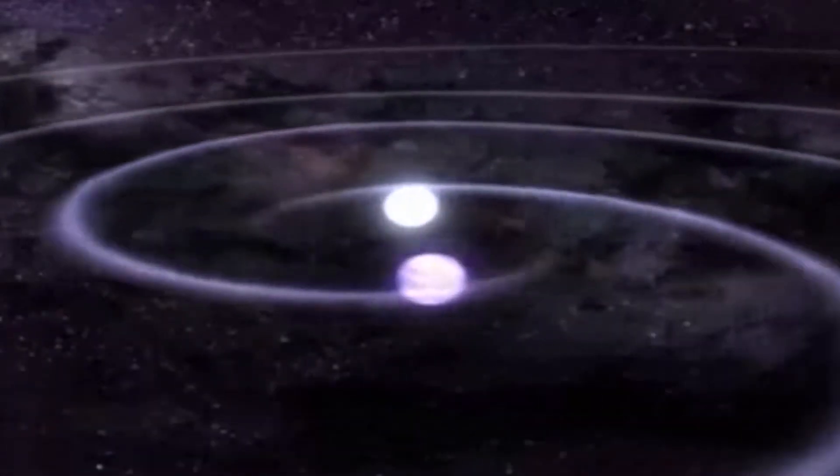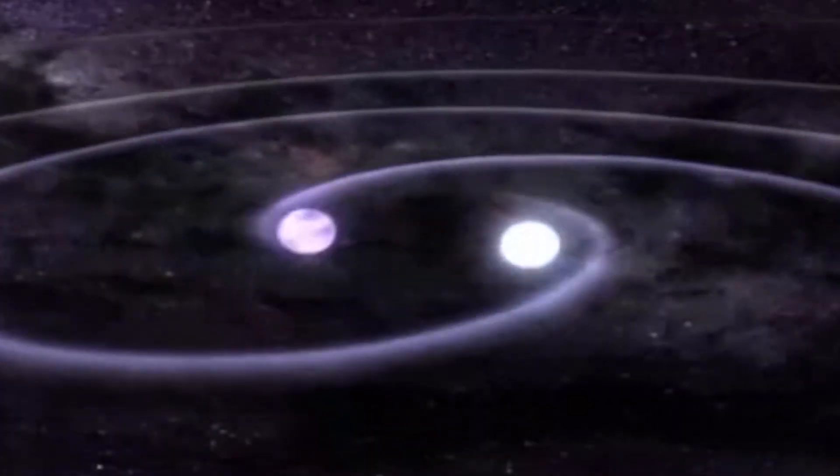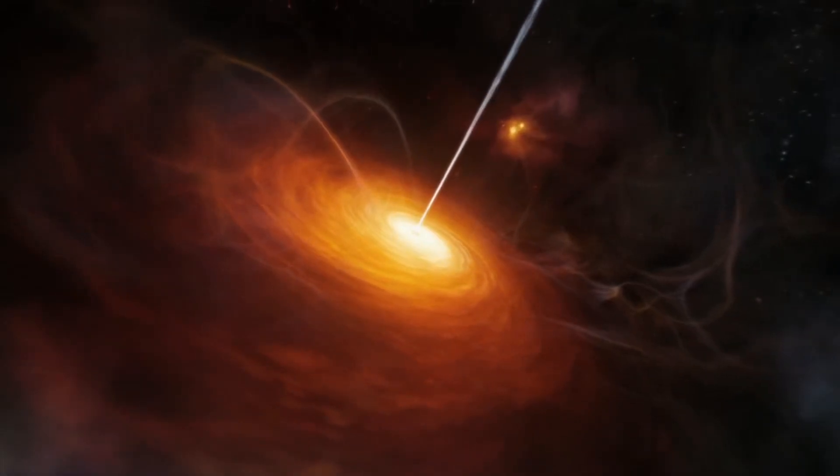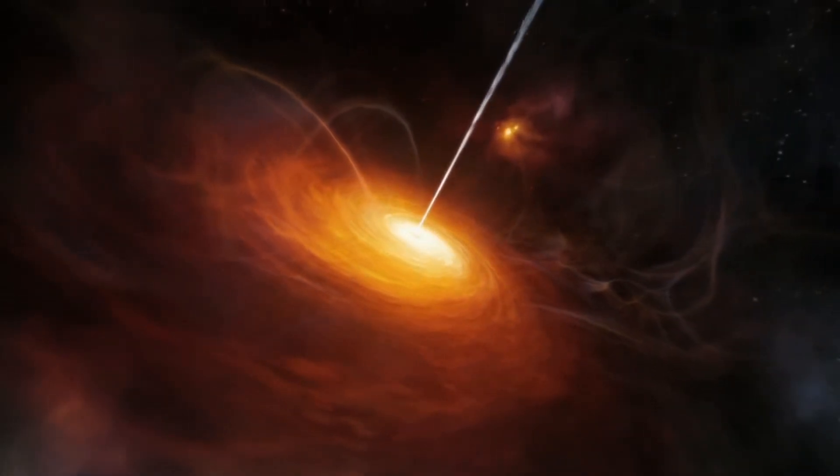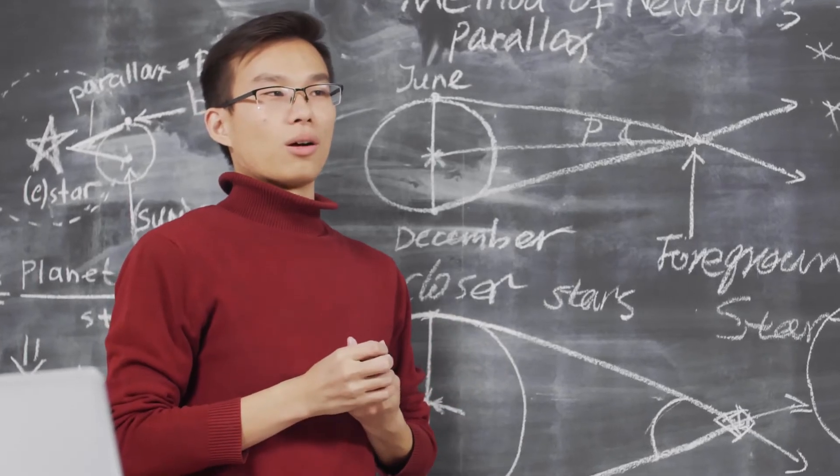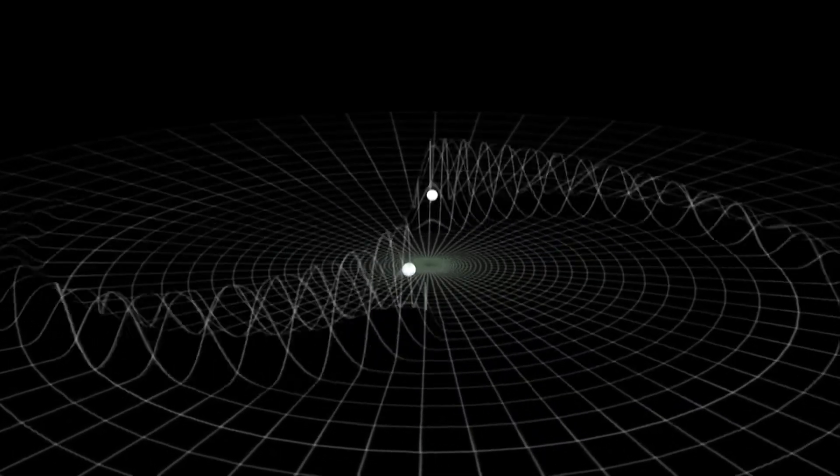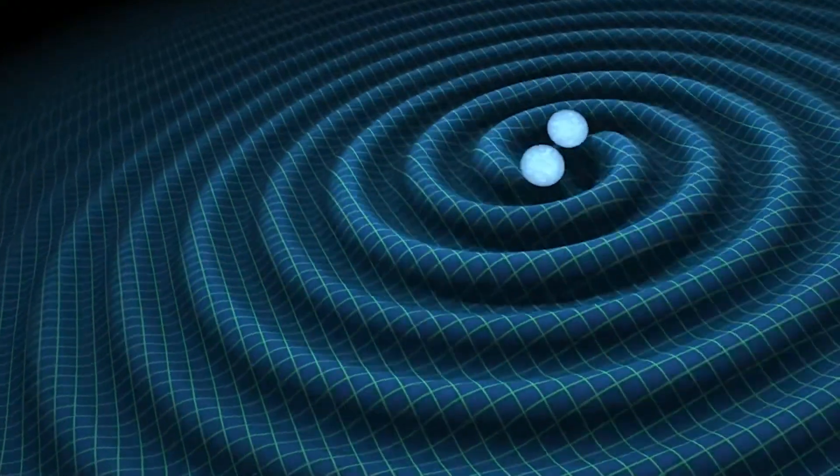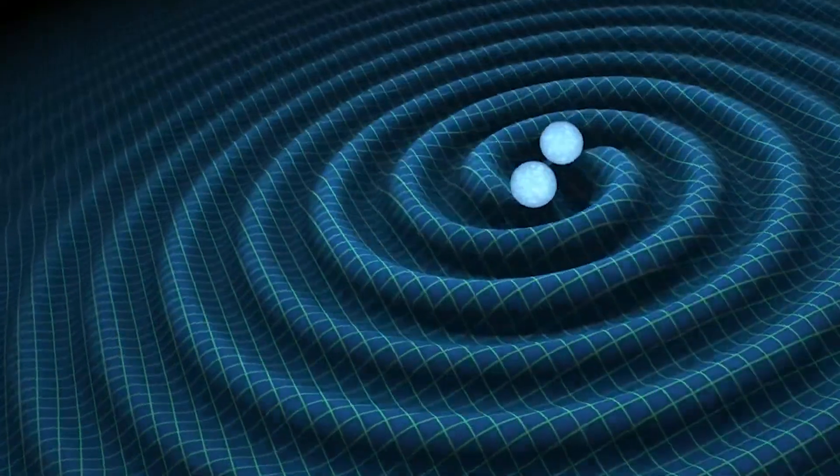The researchers knew that if they could pour through the data and find evidence of this echo, it would all but confirm that they did indeed find the first quantum membrane. After many hours of searching, the team's analysis paid off and they found the signature of a gravitational wave echo that arrived at the LIGO detector 1.1 seconds after the main portion of the wave.